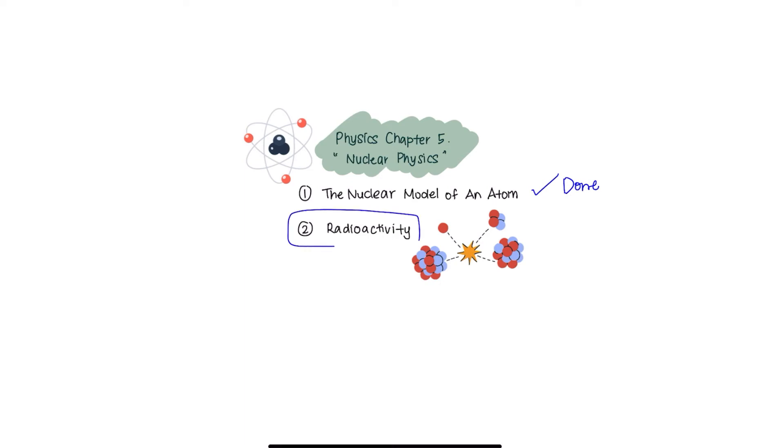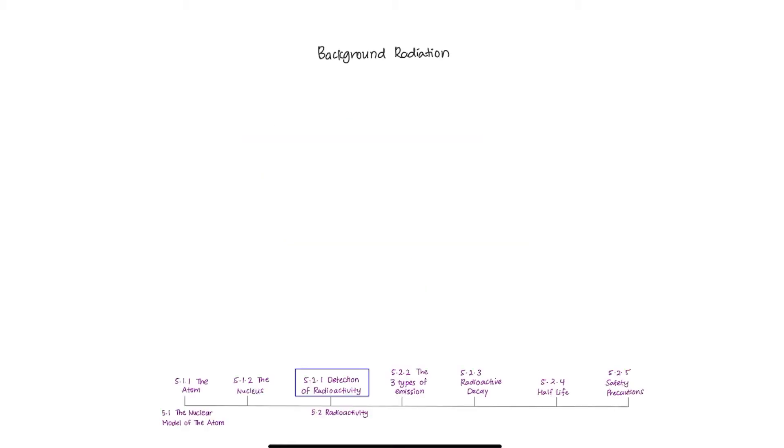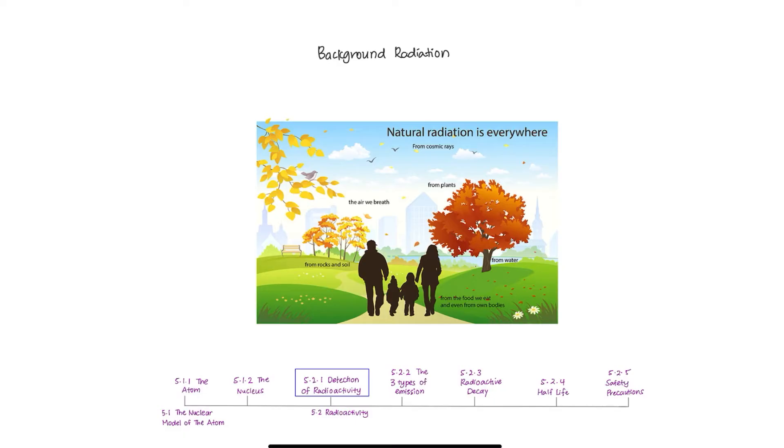Now, let's talk about the second part of this chapter, which is radioactivity. In this subtopic, you will come to learn a new term called background radiation. Background radiation is defined as the radiation that exists around us at all time.